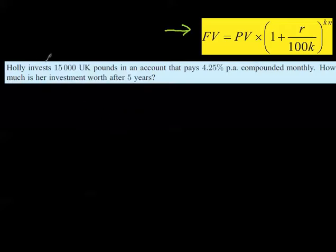First of all, here's a question. Holly invests £15,000 into an account that pays 4.25% interest per annum, compounded monthly. How much is her investment worth after five years? So there's several things to consider. First of all, it's compounded monthly. That means every month it's going to calculate interest, and this is the annual rate, 4.25%.